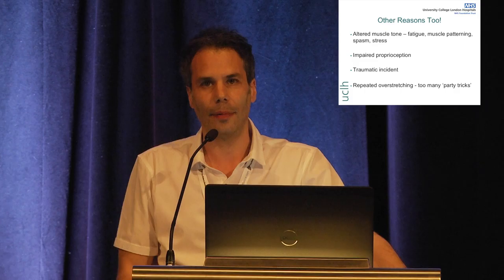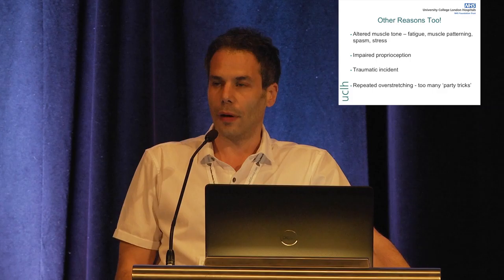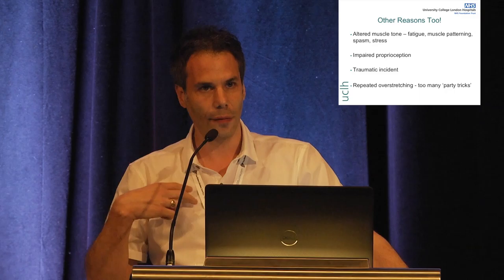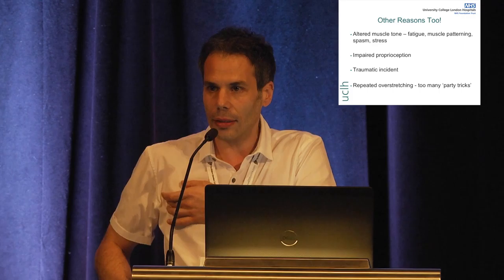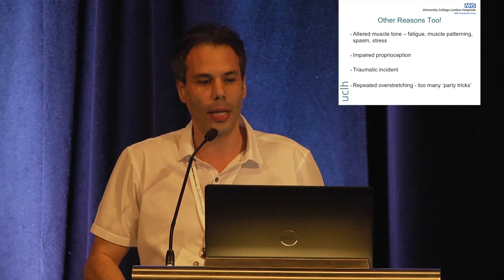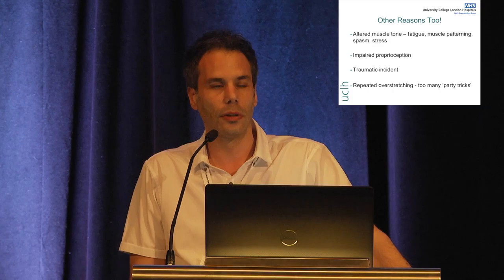Then there's muscle patterning. One of the most common areas for this is the shoulder. What I often find with EDS patients is overactivity of the pectoralis major or latissimus dorsi muscles, working more than they should. They connect to the head of the humerus, and if the pec is overactive and connected to the front, it will pull the joint out of place. If the lats are overactive, they can also pull the joint out. This muscle patterning is another big reason why joints can dislocate.